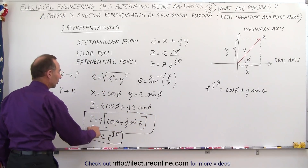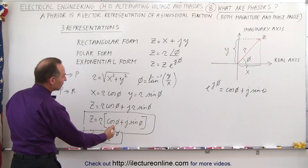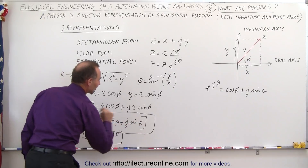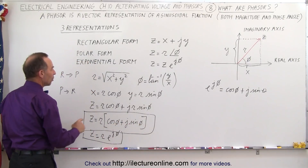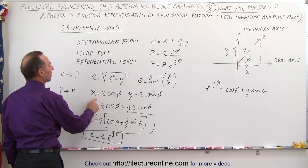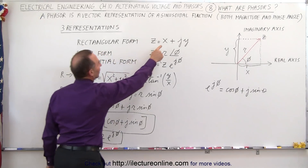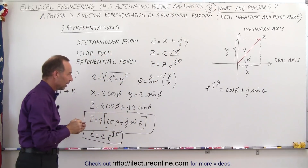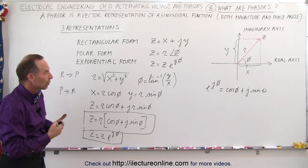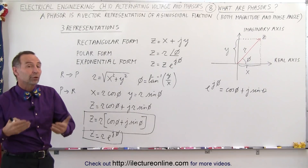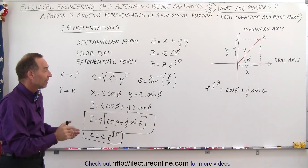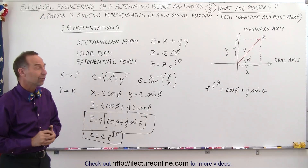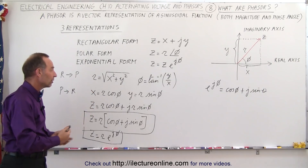We can have the exponential form, or a quasi-rectangular form where x and y are expressed as the cosine and sine of the phase angle phi, or we can simply write z equals x plus j times y — the real part plus j times the imaginary part. Those are all the various forms to represent a sinusoidal voltage or current. Finally, we'll learn how to add, subtract, multiply, divide, take the inverse, take the square root, and more with these functions.